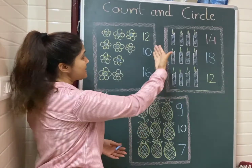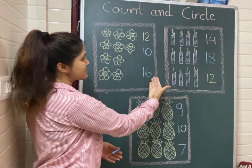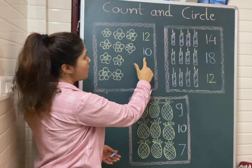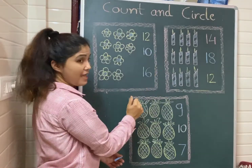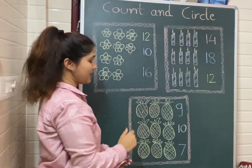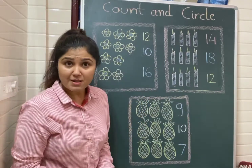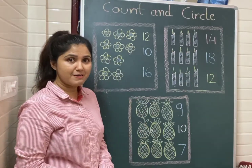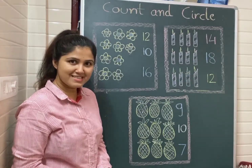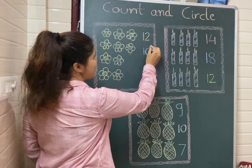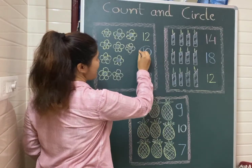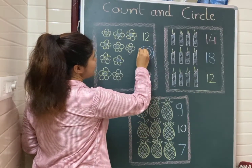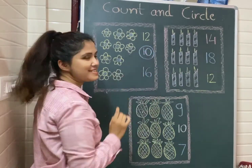So here you can see 3 numbers are given: 12, 10, and 16. Now tell me children, which is the correct number here? Yes, 10. 10 is the correct number. So we will circle number 10.